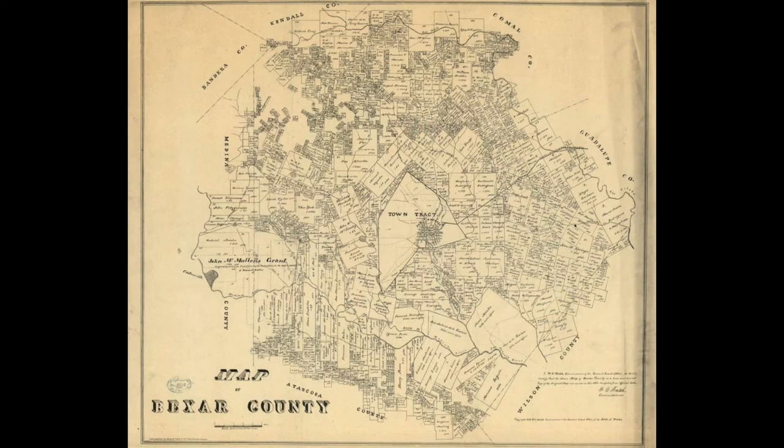We're going to be talking about three families that lived in San Antonio: the Griffin family, the Hockley family, and the Winters family. The significance of these families is that they were once slaves and they owned land on the northeast side of San Antonio.